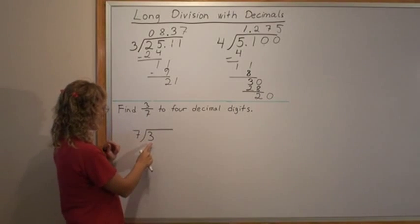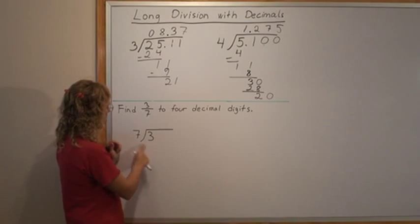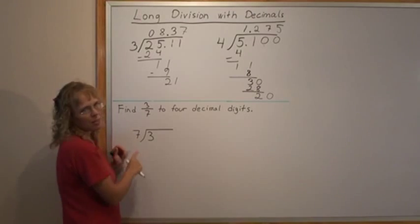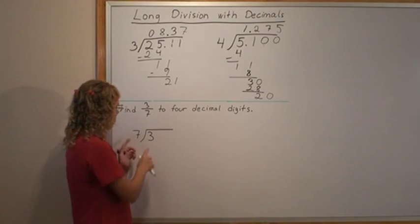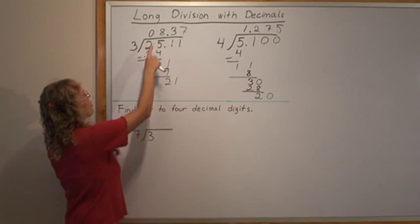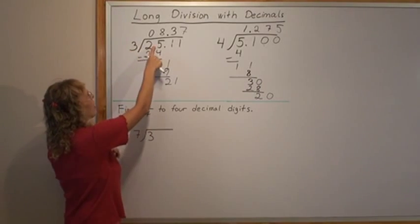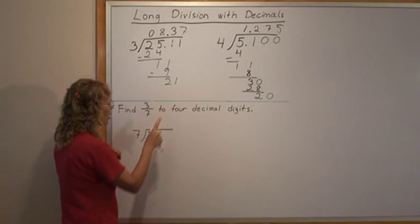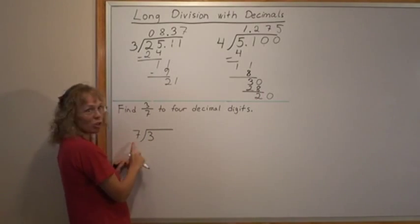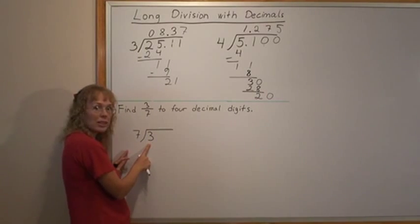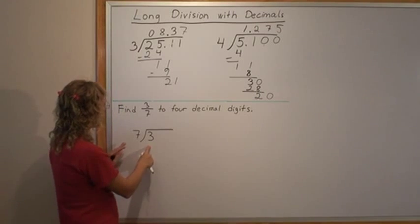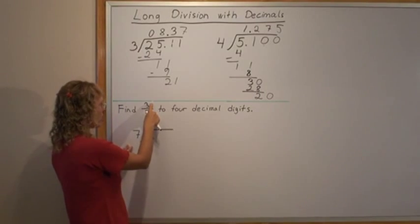So, I just write my 3 here, inside the corner and 7 outside. And sometimes kids don't know which way it goes. But try to remember that you have this number divided by this. 25 divided by 3. So 3 divided by 7. It can look kind of odd because it's a smaller number inside, but that's how it works. We have 3 on top. 3 divided by 7.